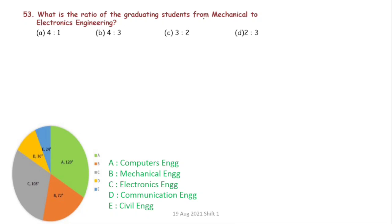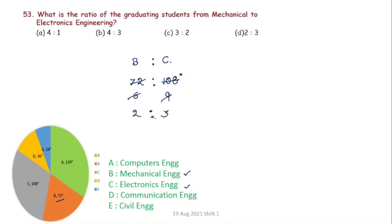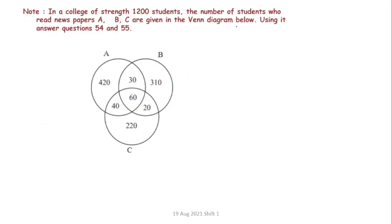What is the ratio of graduating students from Mechanical to Electronics? Mechanical is 72 degrees and Electronics is 108 degrees. The ratio of 72 to 108 simplifies to 2 ratio 3. The answer is option D — 2:3. Very simple.